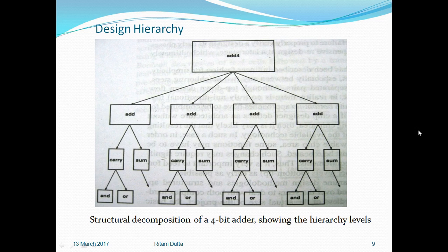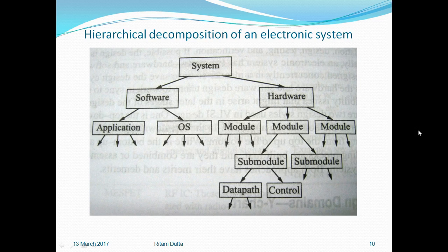Further deep categorization of the carry can also be done using AND and OR gates. By following this kind of sub-categorization or sub-modularization, each individual operation can be performed correctly. Another structural decomposition of an electronic system is also given — a computer system consisting of software and hardware. The software can be designed using applications and OS, and similarly the hardware can also be designed in multiple sub-modules.